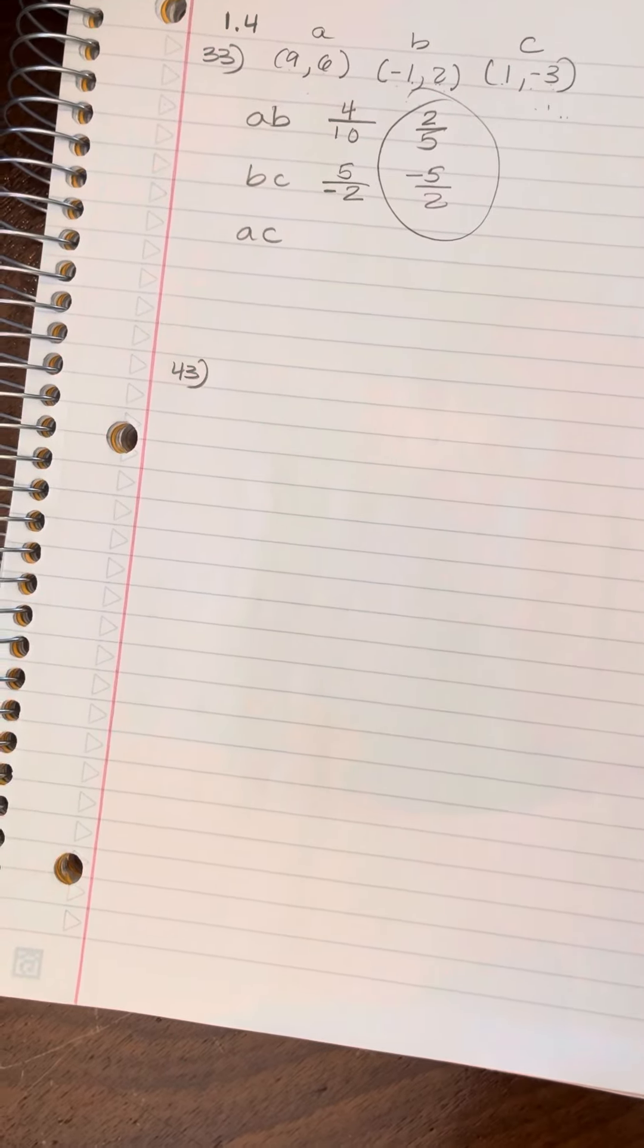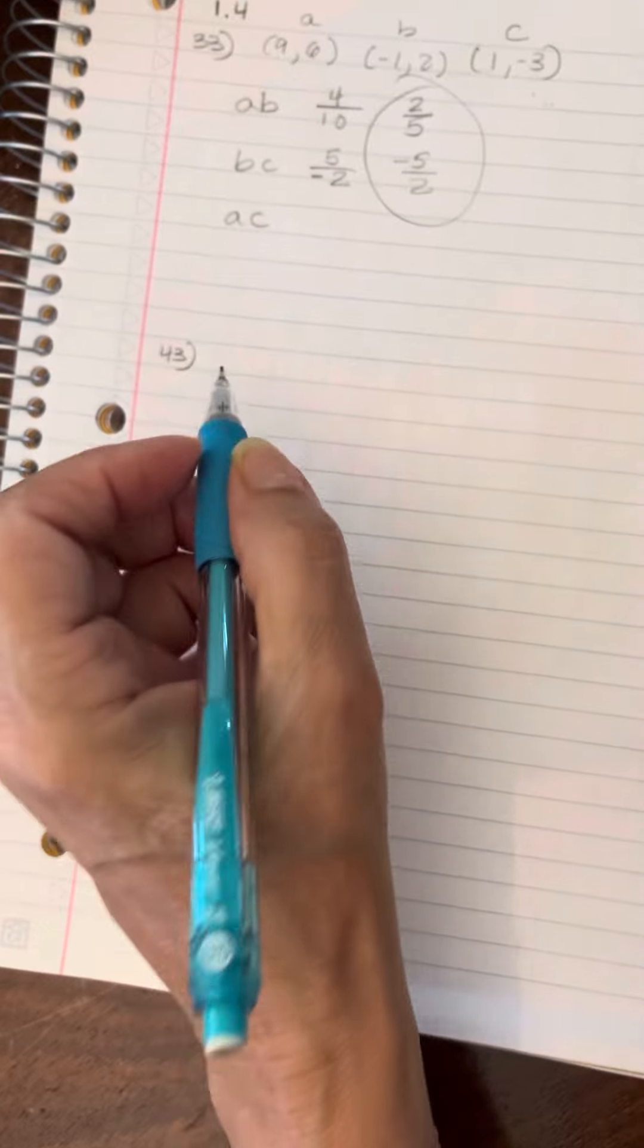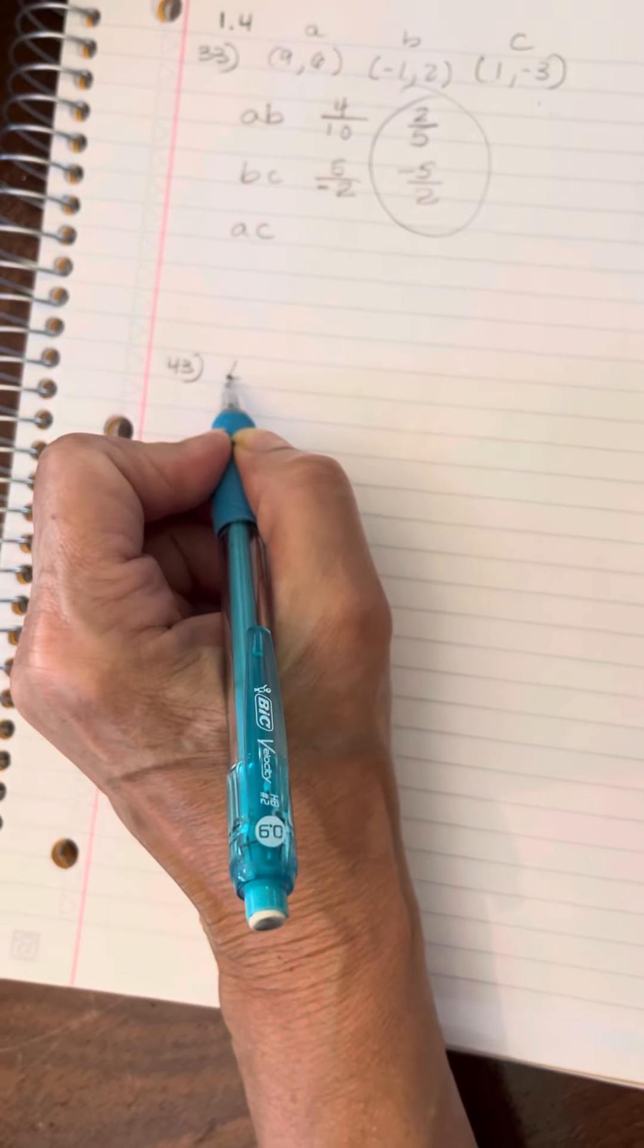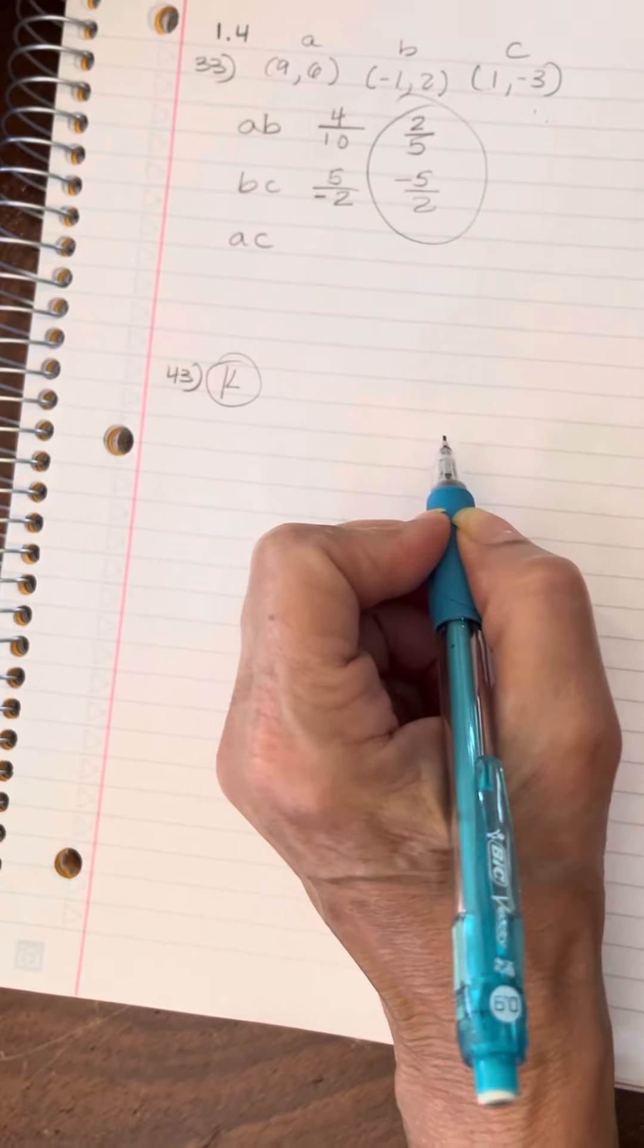All right, number 43. Okay, so we're solving for K. That's what we're solving for.